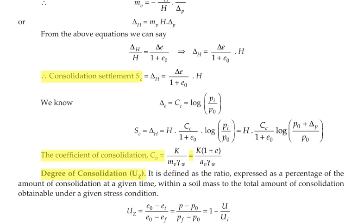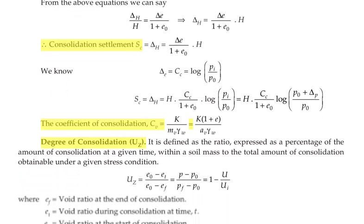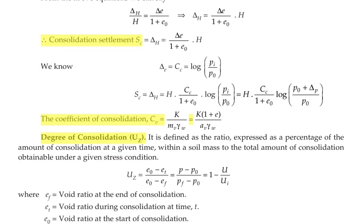Next we are going to see consolidation settlement SC or ΔH. The formula is SC = ΔE / (1 + E0) × H. The coefficient of consolidation CV is equal to K(1 + E) divided by (AV × γw).